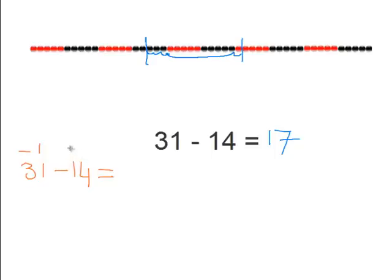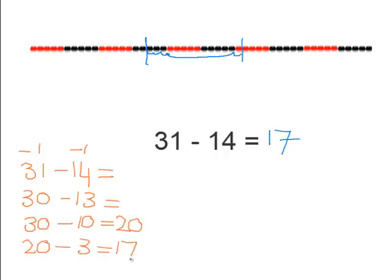So let's first subtract 1 from the 31 to make it a round number. So if we subtract 1 from the 31, we must subtract 1 from the 14. So that gives us 30 minus 13 equals, okay, break it up even more. So 30 minus 10 is 20. And now we just have to subtract 3 more. So 20 minus 3 again is 17.